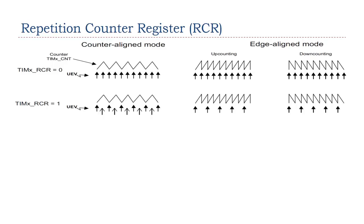When the repetition counter register (RCR) is 1, in the up-counting mode an update event is generated for every other overflow; similarly, in the down-counting mode an update event is generated every other underflow. In the center-aligned mode, the generation of update events is slightly more complicated — an update event can occur either on the overflow or on the underflow, depending on when RCR was written and when the counter was launched. If RCR was written before launching the counter, update events always happen on overflows. If RCR was written after launching the counter, update events always take place on underflows.